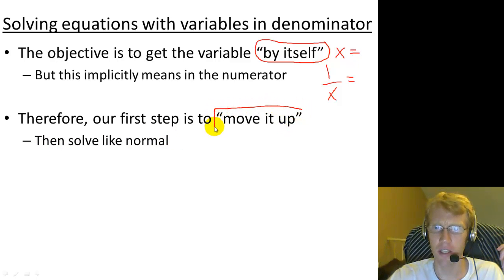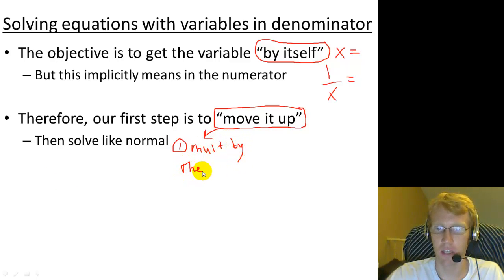There's probably more than two, but there's two simple ways to move it up. One of the ways is to multiply by the variable. So if you have x in the bottom, multiply both sides by x, and now x will be in the top.